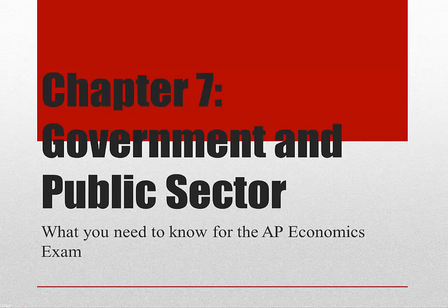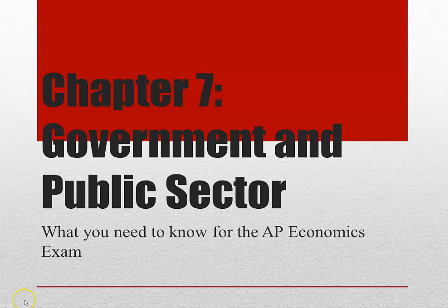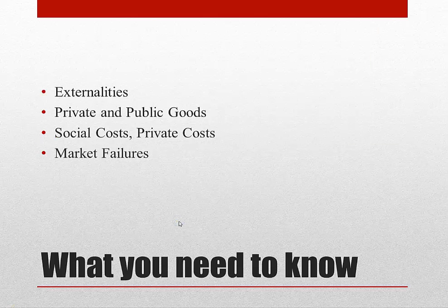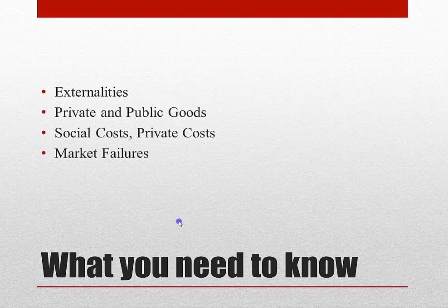My name is Dylan, and today I will be going over Chapter 7 of the Barron's AP Economics book. I'll talk about what you need to know in this chapter for the AP exam, both micro and macro. What you need to know in this chapter are four topics: externalities, private and public goods, social costs and private costs, and market failures.